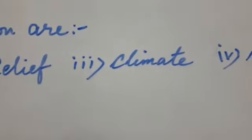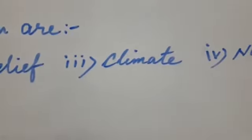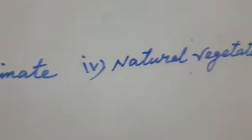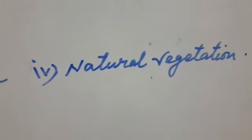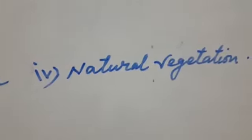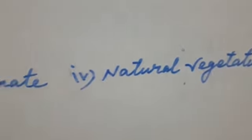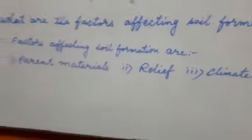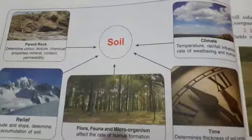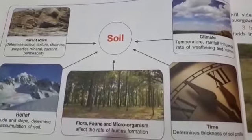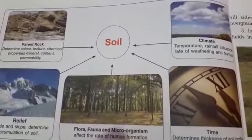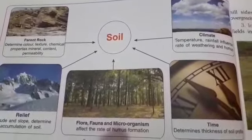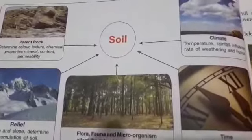Number three, climate; number four, natural vegetation. This is very important. See, this is the figure — formation of soil. You can see the parent rock in the diagram.